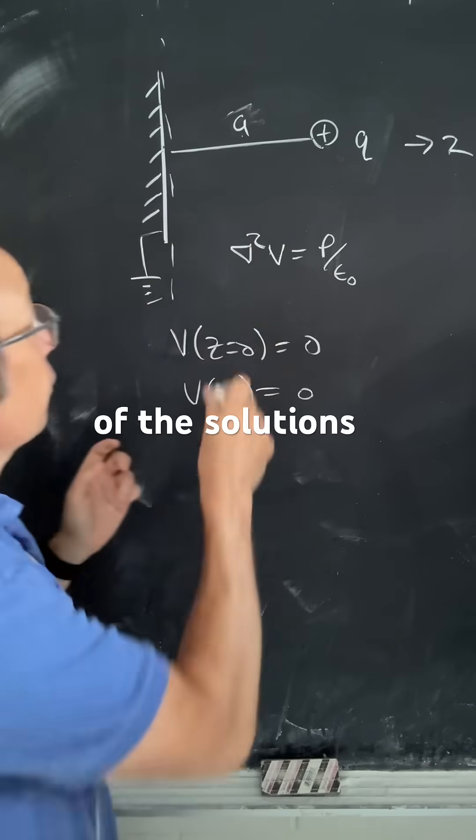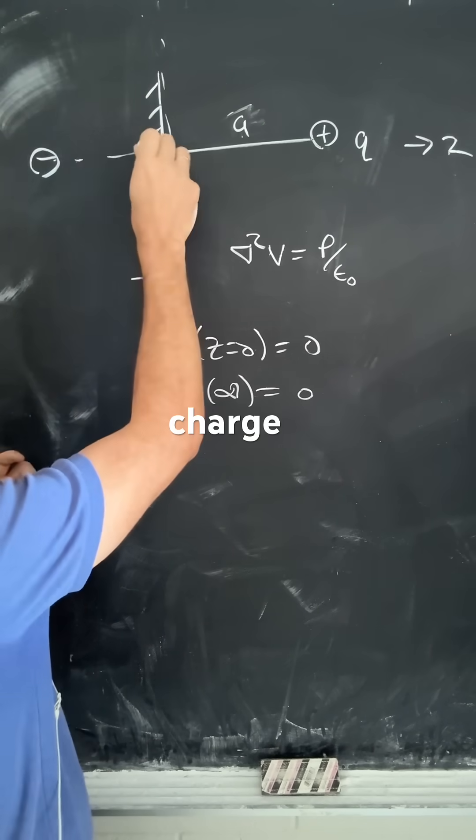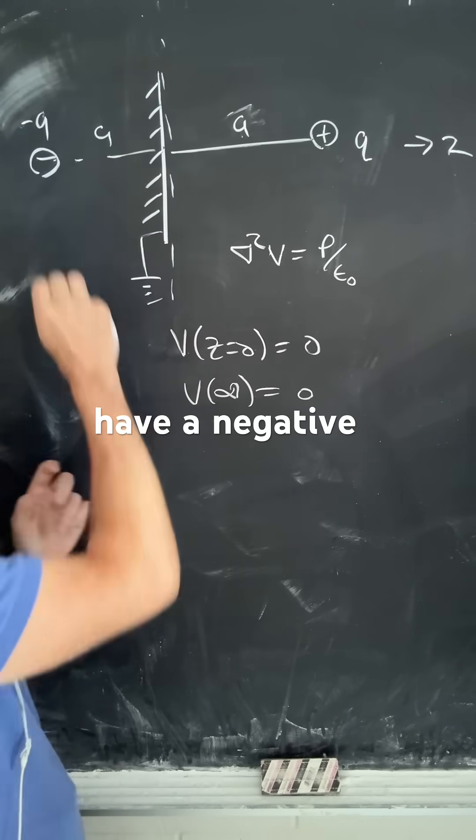And one of the solutions is to put over here a negative image charge the same distance away, but have a negative value.